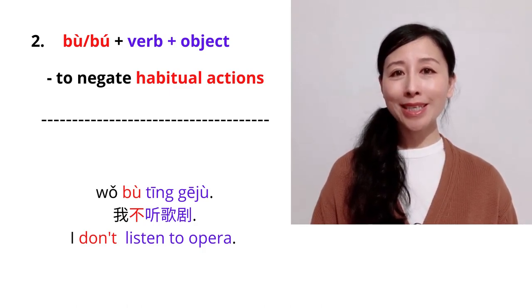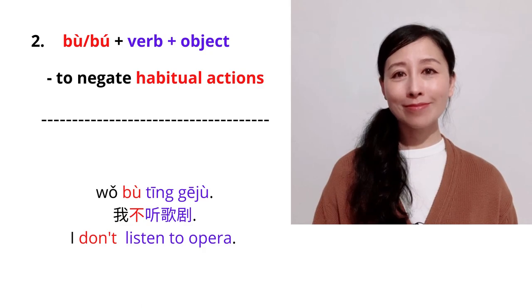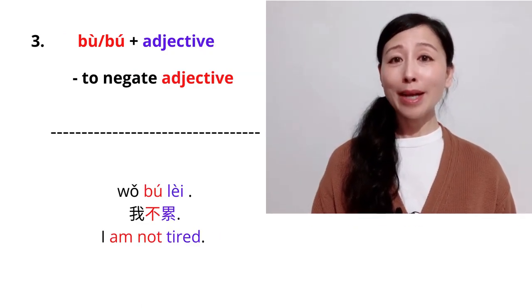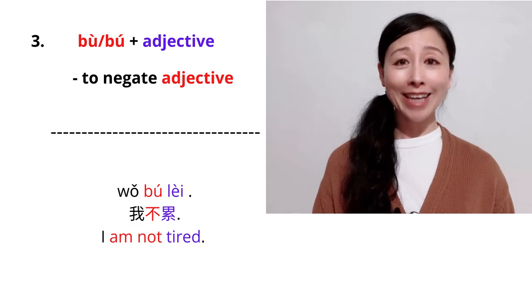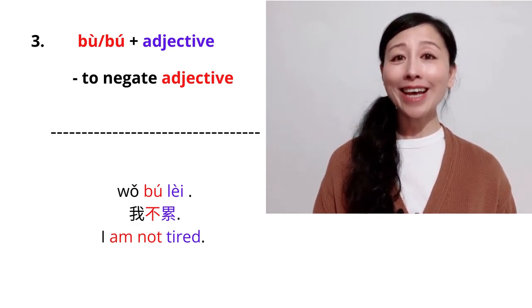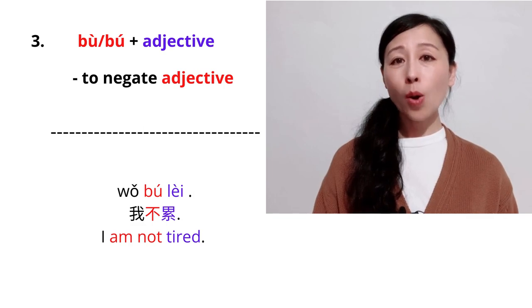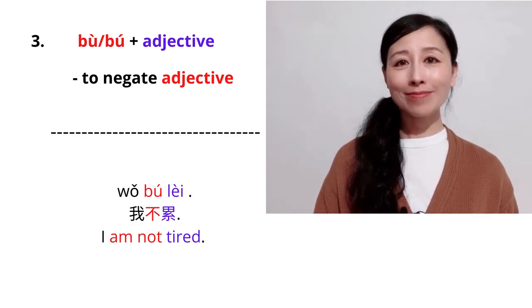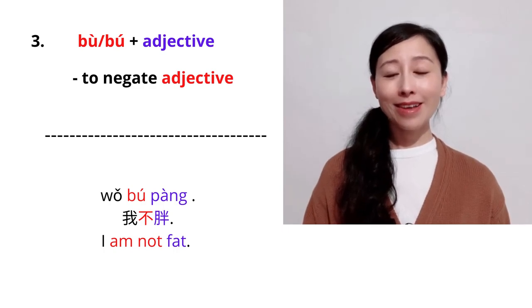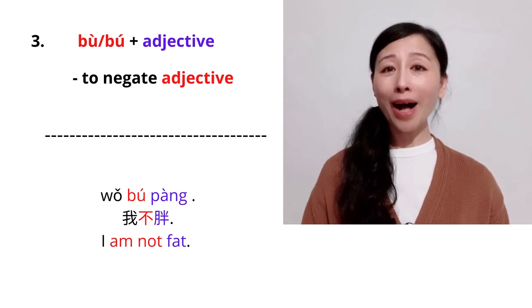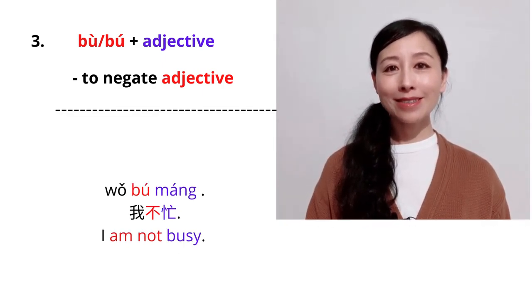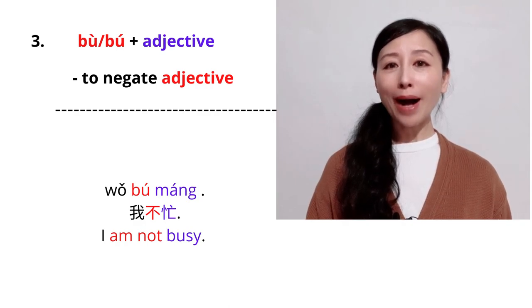The third usage of bu can be placed in front of adjectives. It's used to negate adjectives. For example, I'm not tired. Wǒ bù lèi. I'm not fat. Wǒ bù pàng. I'm not busy. Wǒ bù máng.